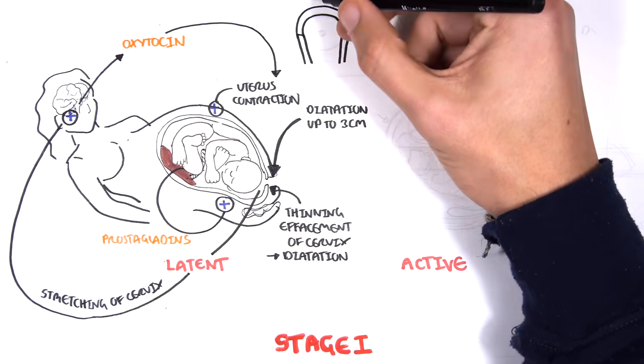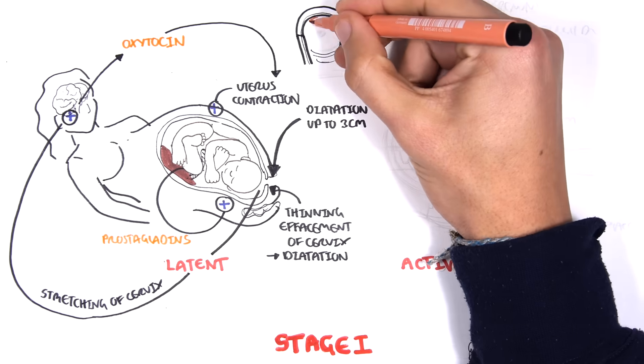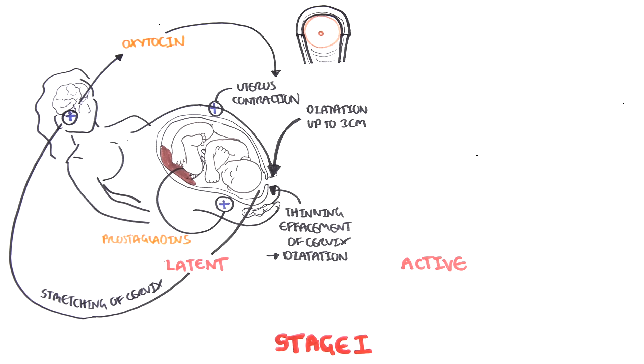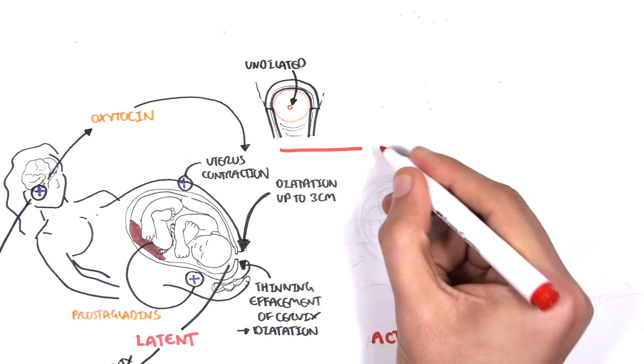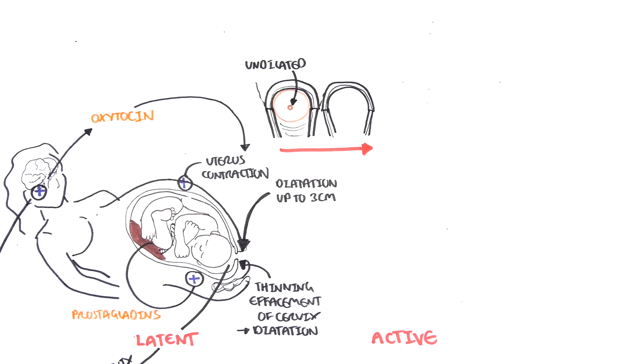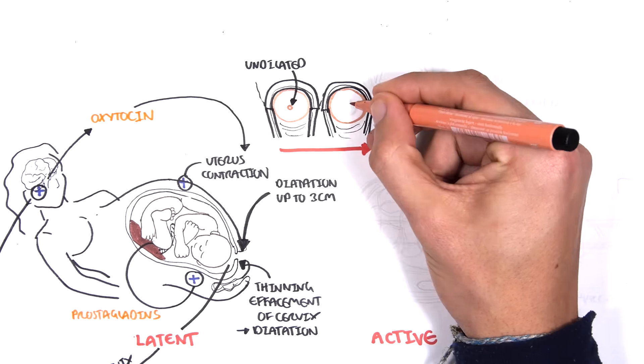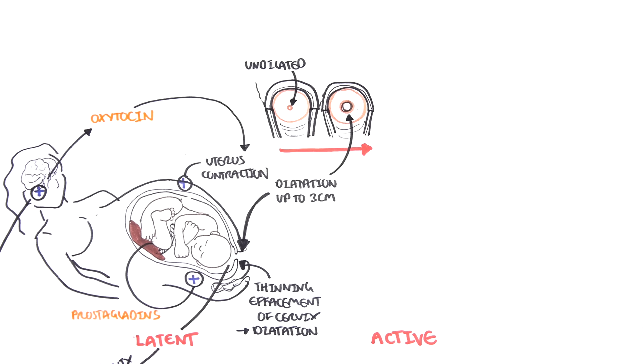I am now drawing the cervix, looking at it from the front. The vaginal wall is at the bottom here. As you can see, the cervix is not dilated here. But as labor progresses, the cervix will dilate. Here, the cervix is about 3cm dilated.